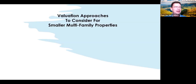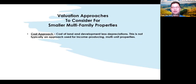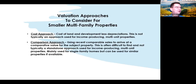There are three types of approaches when an appraiser is looking at a property. The first is the cost approach, where you assign a value for the land, the development — which is your infrastructure and structure — and then subtract depreciation. This is not typically an approach used for an income-producing multi-unit property. Feel free to chat in or jump in audio-wise if you have anything to add.